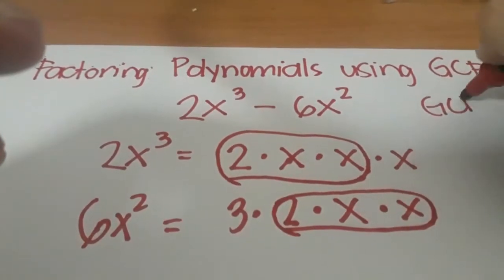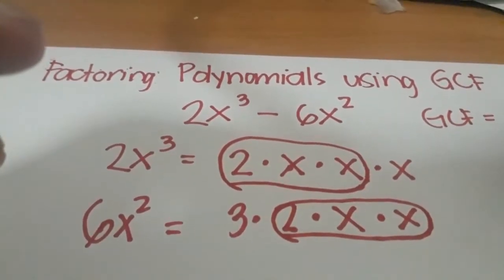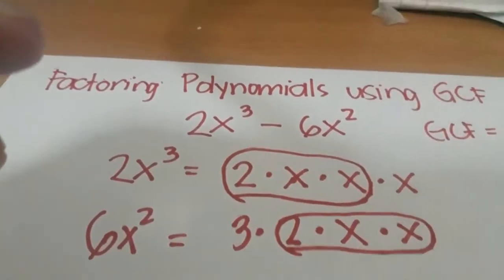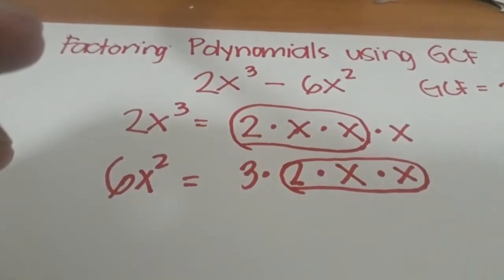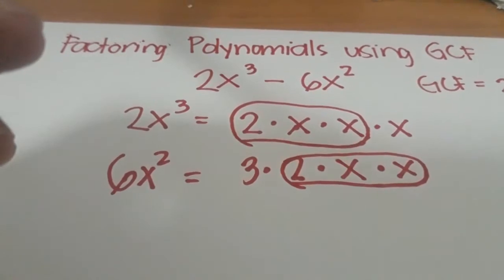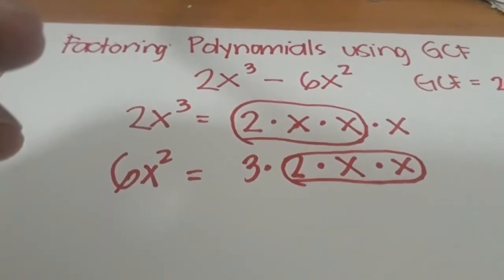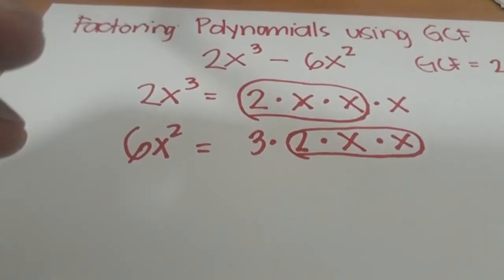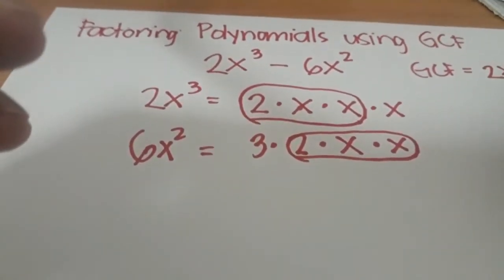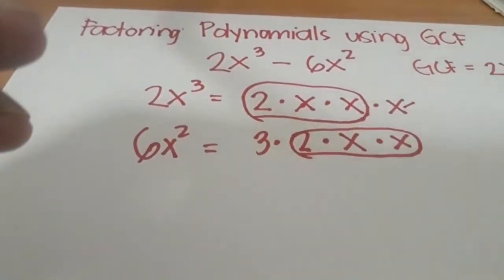Therefore our GCF is 2x². Now what's the second step? The second step is we have to express each term as a product of the GCF and another factor. So how are we going to do this? We'll use the GCF and the remaining factor.